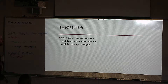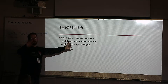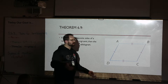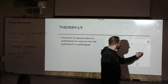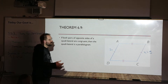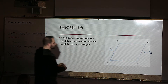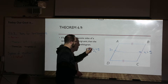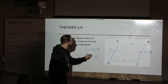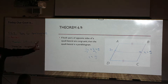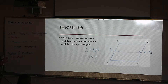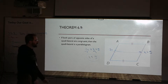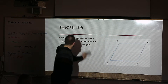Theorem 6-9: opposite sides are equal, and the shape has to be a parallelogram. What we've done previously on problems like this is they give us something like a side length, and they ask us to solve for X. You know the opposite sides are equal, it's a parallelogram, so you set those two sides equal to each other and solve for X — subtract X across, and you're left with one X equals five. That's the stuff we've been doing for two assignments now. You should be good at that.